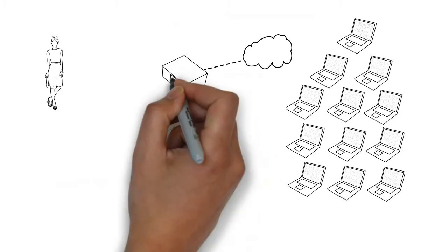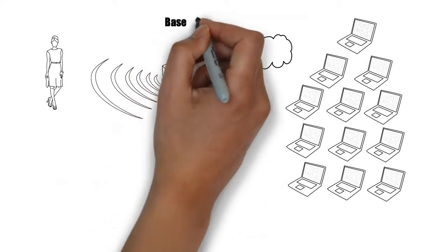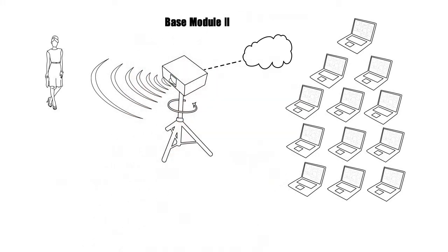You can also replace the base module 1 by the base module 2, which is a powerful FMCW radar, able to operate in modes like FMCW or frequency shift keying.